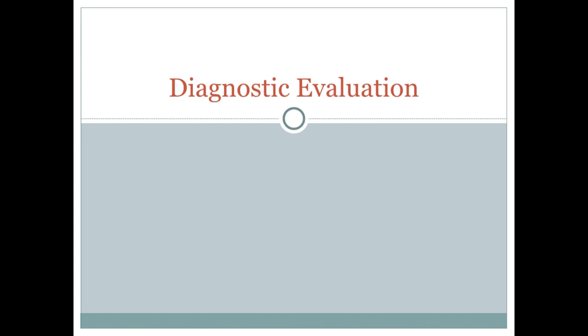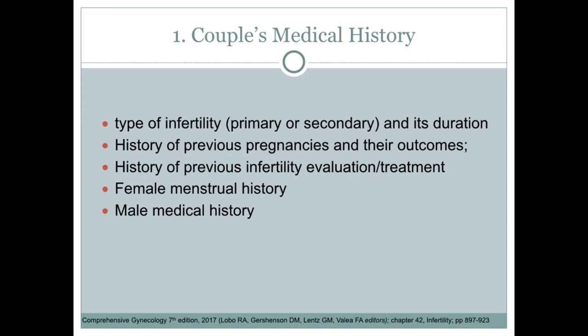Let us discuss some of the diagnostic modalities we use for infertility. The first two are obtaining the couple's medical history and physical examination. History and PE should be thorough and completed as rapidly as possible. During the initial interview, the couple should be informed about normal human fecundity and how these probabilities decrease with increasing age of the female partner and with the duration of infertility. The various tests and available therapies and prognosis should also be thoroughly explained.